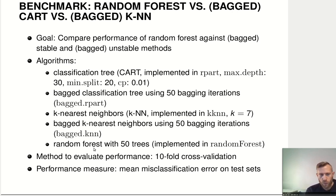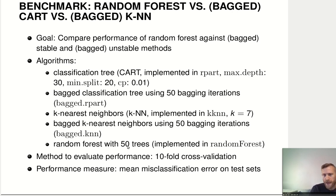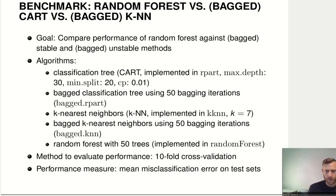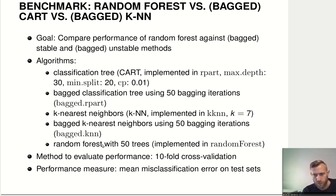Similarly, we'll do a random forest with 50 trees. Here we have a single tree, here we have a bagged tree, and here we have 50 trees that are bagged. Additionally — and this is what distinguishes random forest from other bagging methods — we do random feature subsampling to create a decorrelated ensemble. That's the difference between the bagged tree and a real random forest: random feature subsampling.